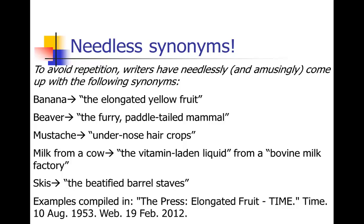These examples were compiled in an article in Time — the reference is there if you want to read further. Probably the most famous example: someone was writing about a fruit company and used the word 'banana' several times. Feeling they'd used it too many times, they started referring to the banana as 'the elongated yellow fruit.' There was also a piece where the author replaced 'beaver' with 'the furry paddle-tailed mammal.' Another article replaced 'mustache' with 'under-nose hair crops.' And another referred to milk from a cow as 'the vitamin-laden liquid from a bovine milk factory.'